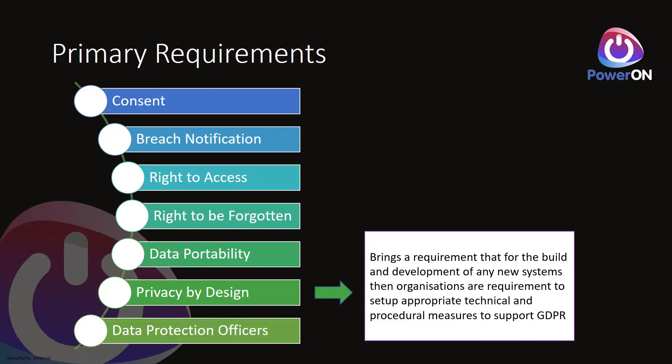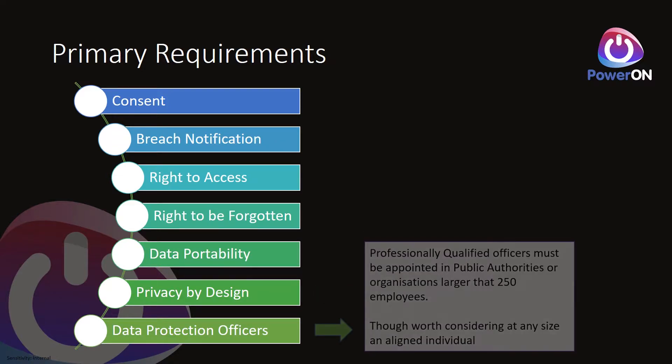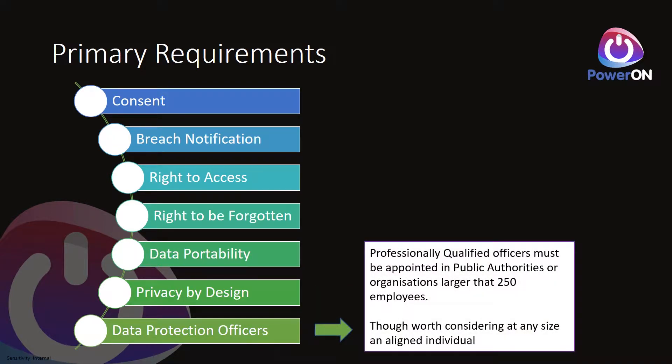Pushing GDPR requirements into your procurement frameworks will be essential. As suppliers ourselves, we also need to build this into our own products. On the data protection officer requirement: if you're a public authority or an organisation of more than 250 people, an individual must be professionally qualified and nominated as your Data Protection Officer. Even for smaller organisations, it's worth considering at any size — it needs full executive and organisational business sponsorship, and having someone at an appropriate level with clear responsibility is key to taking a proactive stance on data privacy.